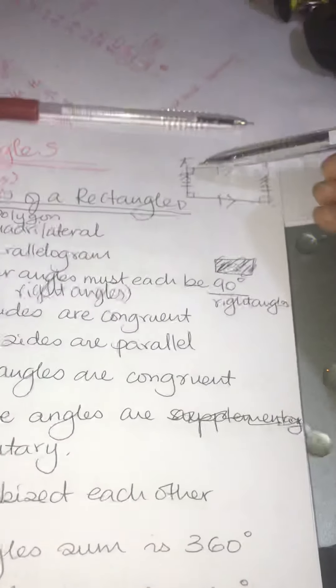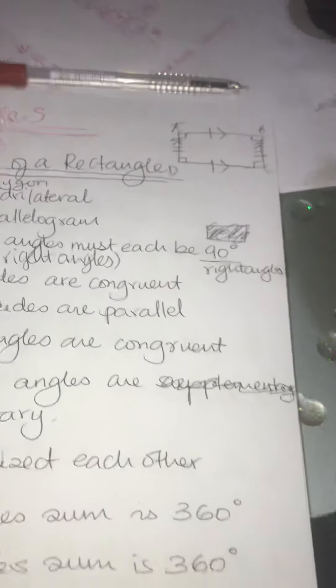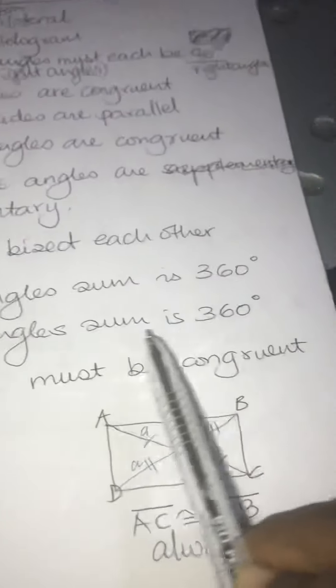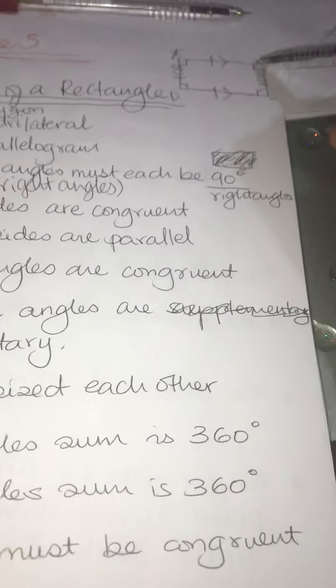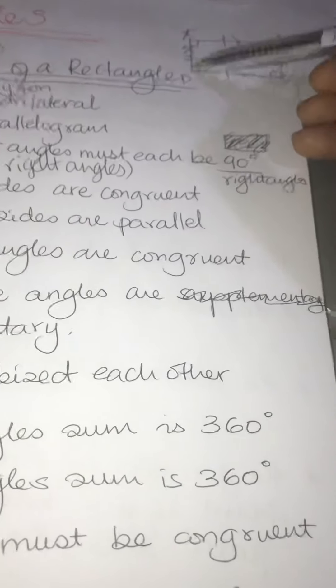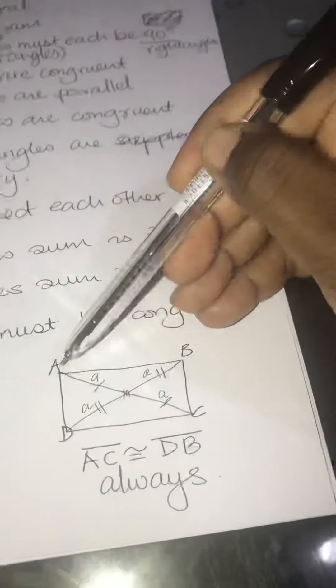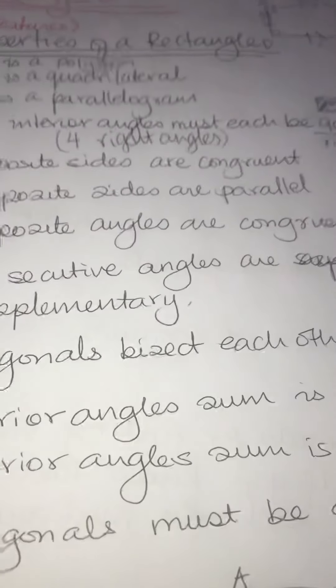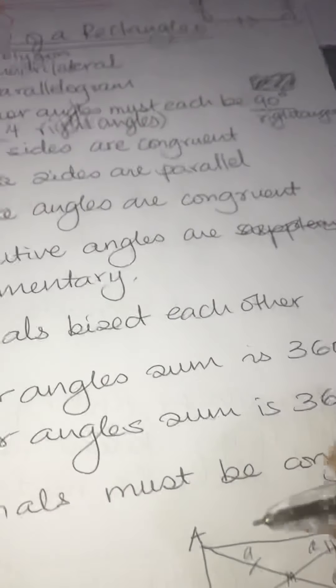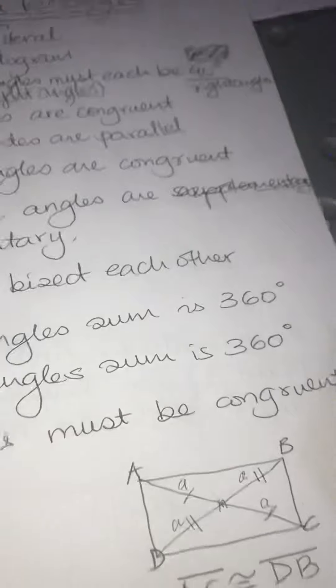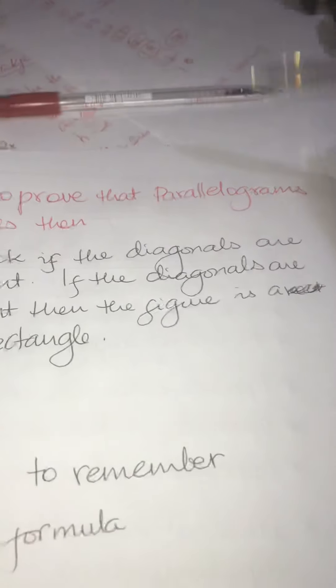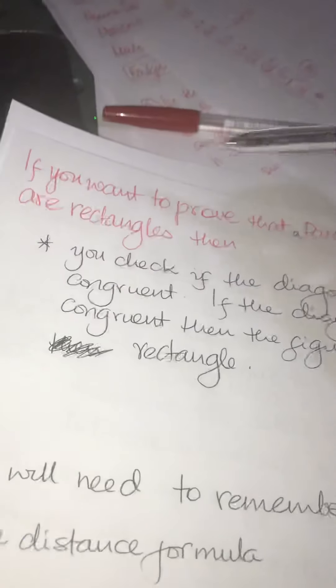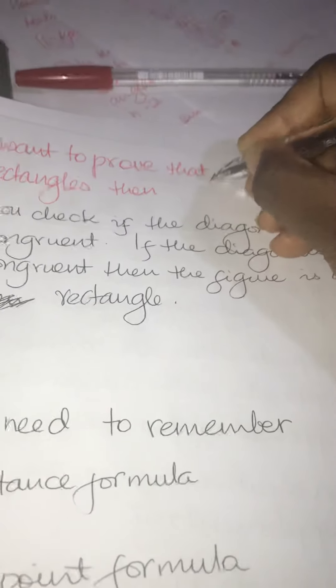The interior angle sum is 360 degrees — if I add all the angles inside, I get 360. The exterior angle sum is also 360 degrees — if I add the four exterior angles, I get 360. The diagonals must be congruent: AC will always equal DB in a rectangle. Remember, I didn't say in a parallelogram — in a rectangle, the diagonals will always be the same.